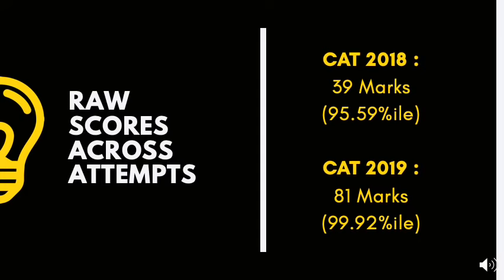My score in CAT 2018 was 39 marks, which is 95.59 percentile, and in CAT 2019 it jumped to 81 marks, which amounts to 99.92 percentile. The reason behind this jump was a change in strategy and an increased effort into understanding the fundamentals of the various topics, which I hadn't done in 2018. I had stuck to a few topics and hadn't covered all topics to achieve a score of more than 99 percentile.